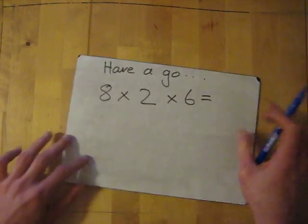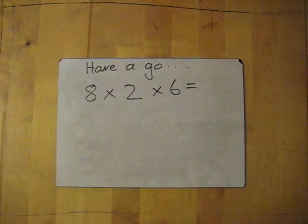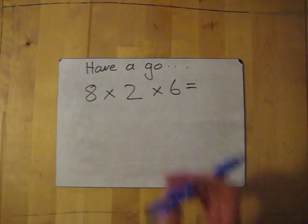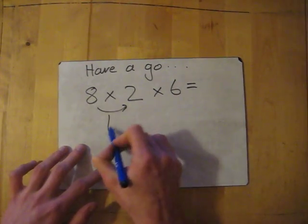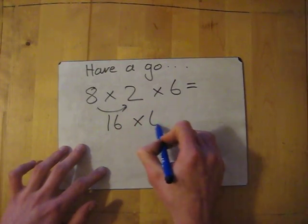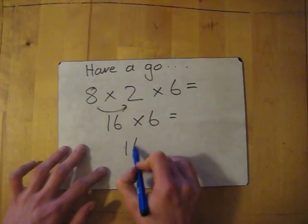Let's have a go at the last one. So if you want to pause it: 8 times 2 times 6, and have a little go. I'll go over the answer in 3, 2, 1. Okay, so 8 times 2 gives me 16, so I'm going to do 16 times 6.